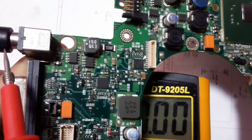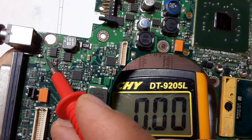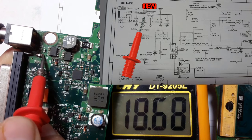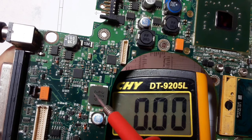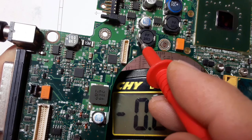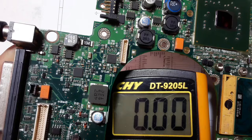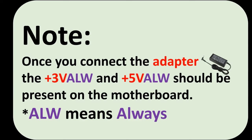What should we do right now? We should confirm whether the 19 volts is being received by the motherboard. Let's check this inductor — this is the input. As you can see, we get 19 volts. We have 19 volts. So because we have 19 volts, normally we should get 3 volts and 5 volts here, because these voltages are always present in the motherboard once you connect the adapter, without even powering on the motherboard.